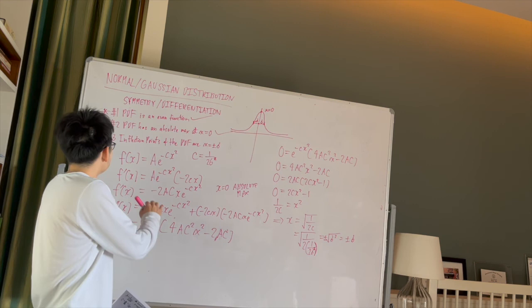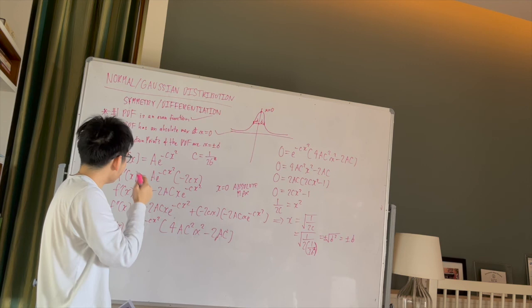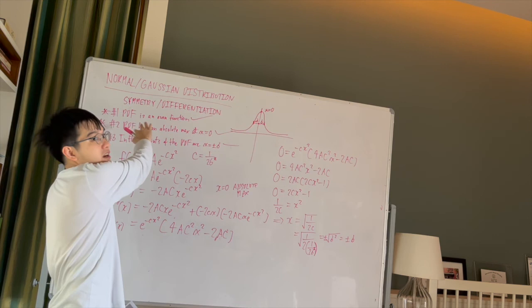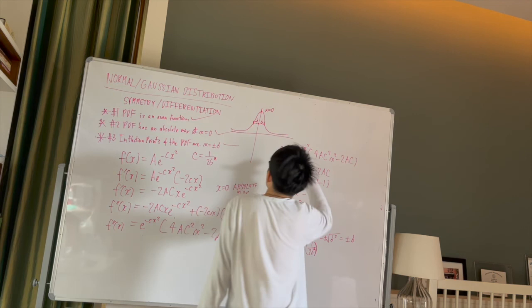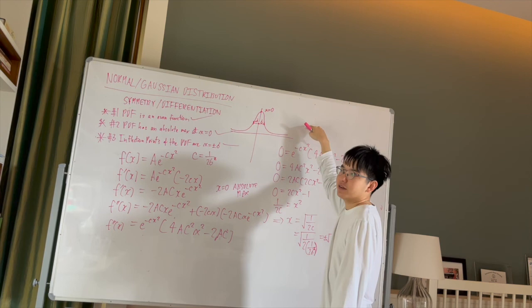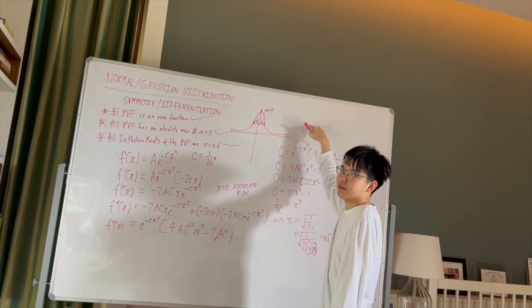I've only shown that for the case in which mu equals zero, that the PDF is an even function. But that really shouldn't matter in a loose sense, because if you were to translate the function onto a different point, it shouldn't affect the derivative. So basically, I'm saying that derivatives are invariants, or they don't change, under translation.